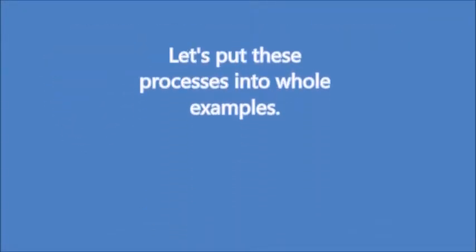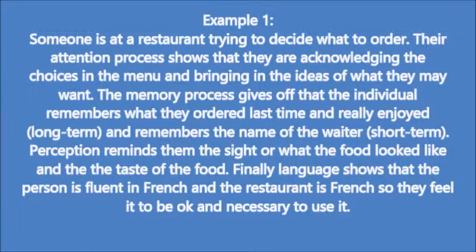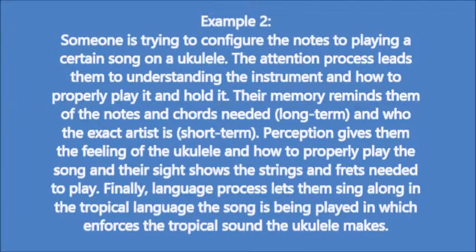Example one: someone at a restaurant deciding what to order. The attention process shows them acknowledging the menu choices. Memory gives off that they remember what they enjoyed last time, which is long-term, and the waiter's name, which is short-term. Perception reminds them of what the food looked like and its taste. Language shows the person is fluent in French and the restaurant is French, so they feel it appropriate to use it. Example two: someone configuring notes to play a song on a ukulele. Attention leads them to understand the instrument and how to properly hold and play it. Memory reminds them of the notes and chords needed, which is long-term, and who the artist is, which is short-term. Perception gives them the feeling of the ukulele and their sight shows the strings and frets needed. Language lets them sing along in the tropical language the song is played in, enforcing the tropical sound.